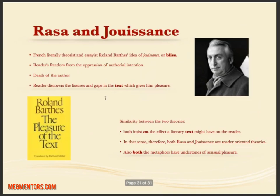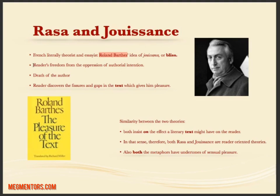Finally, there is a comparison between Ras and Roland Barthes' concept of Jouissance or Bliss. Barthes was a French literary theorist who said the reader is free from the oppression of authorial intention — the author cannot dominate the reader, and the reader has freedom of interpretation. He gave the term 'death of the author,' where the reader explores gaps for pleasure. A similarity is drawn between Rasa theory and Jouissance theory: both insist on the effect a literary text has on the reader, both are reader-oriented theories, and both have some undertones of sensual pleasure.